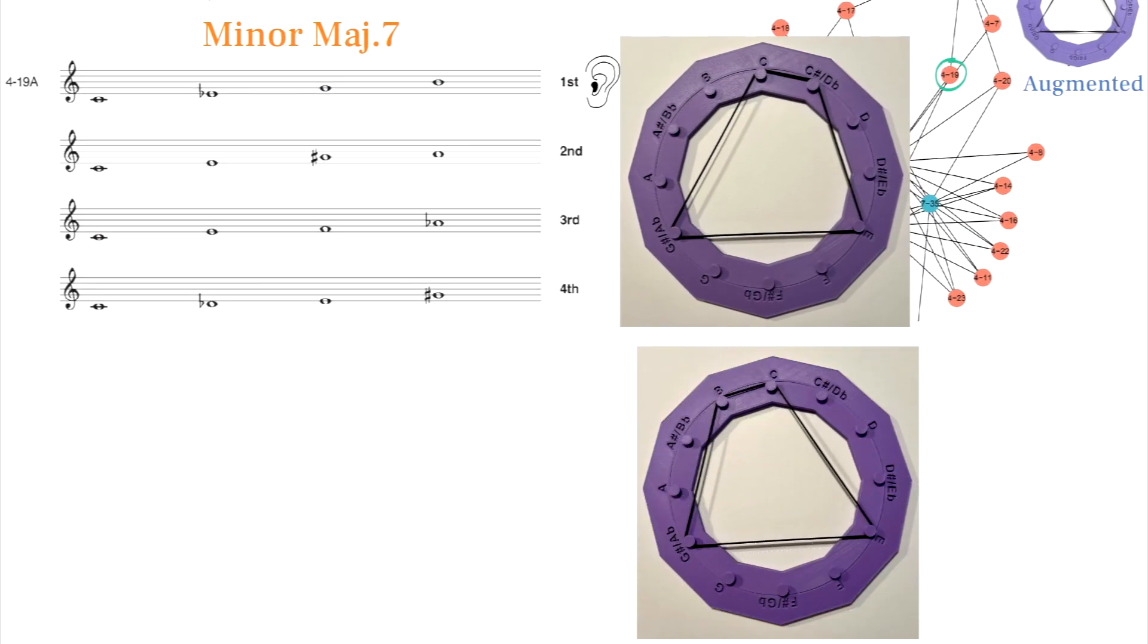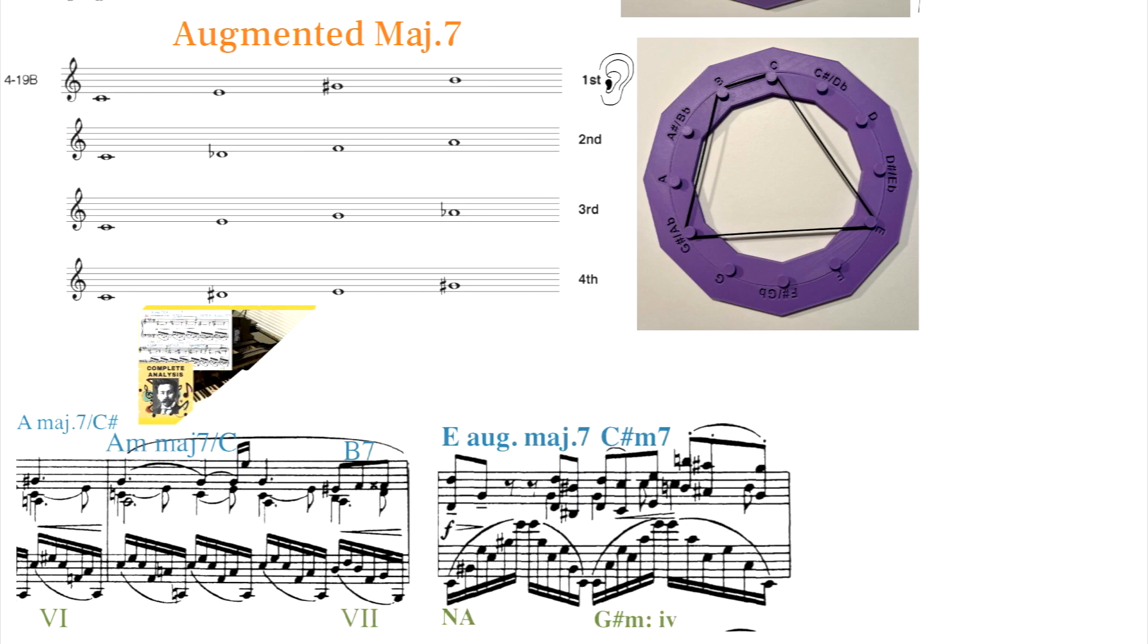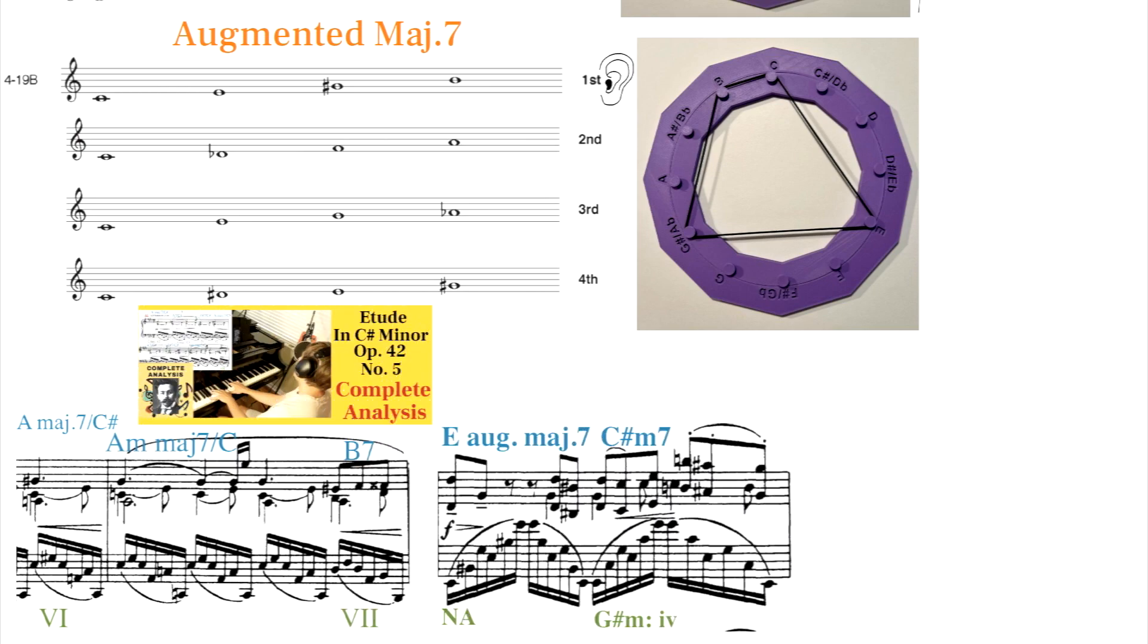When a pitch is added to the left side, it's 419B, often used as an augmented major 7th chord. We can hear both of these inversion pairs used as passing chords in Scriabin 42-5.